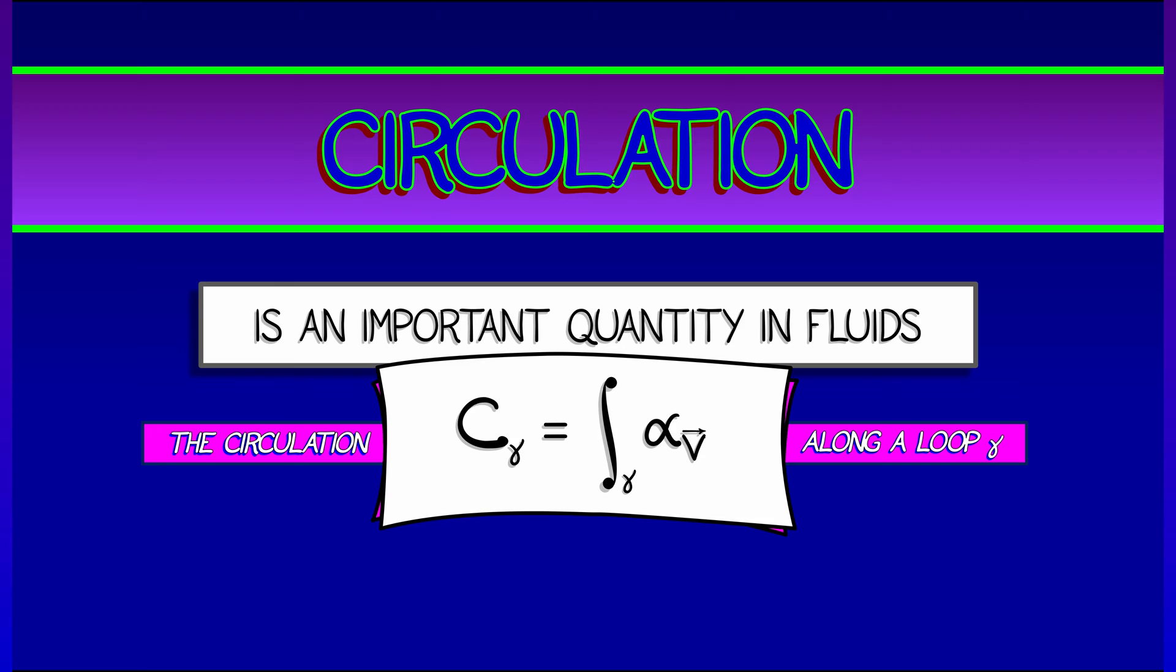c sub gamma that is given by integrating the velocity one form alpha sub v over this loop.